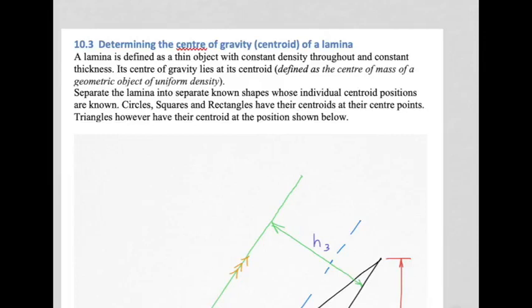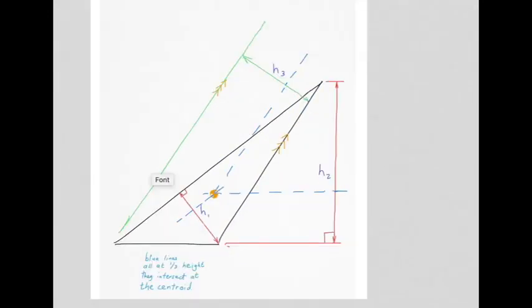These are basically going to be thin objects, same material throughout, and they're going to have distinctive shapes. Now how to calculate that? Well we separate the lamina into separate known shapes, and then we find the individual centroid positions of the various shapes. Circles, squares, and rectangles are obvious; their own centroids are right at their midpoint.